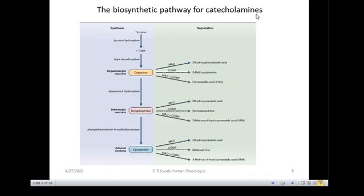For catecholamine biosynthesis, the common starting point is tyrosine. The enzyme tyrosine hydroxylase converts tyrosine to L-dopa. L-dopa is then converted to dopamine by dopa decarboxylase. Dopamine is converted to norepinephrine by dopamine beta-hydroxylase. Norepinephrine is then converted to epinephrine by phenylethanolamine N-methyltransferase. So dopamine is synthesized first and can be converted to norepinephrine and then epinephrine by a series of enzymes.